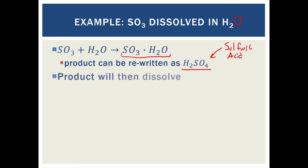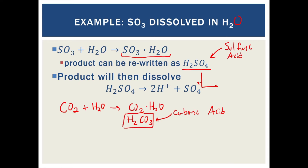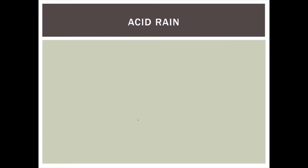Because sulfuric acid is an acid, it will dissociate to create SO₄²⁻. Other non-metal oxides do the same thing — for example, if I take carbon dioxide and add it to water, we get CO₂ hydrate, which we can write as H₂CO₃ — carbonic acid. So the carbon dioxide we breathe out actually has the ability to combine with water vapor to create carbonic acid. This is part of the reason why rainwater tends to be slightly acidic: the water combines with CO₂ in the atmosphere to create small amounts of H₂CO₃.